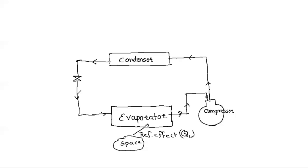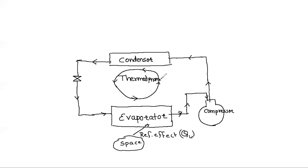This broadly represents a refrigeration system. When I say refrigeration system, it also includes AC systems, since any air conditioning system involving cooling has a refrigeration system. A thermodynamic cycle is a set of processes which gets you back to the initial state. Process 1 to 2, practically speaking, is a compression.